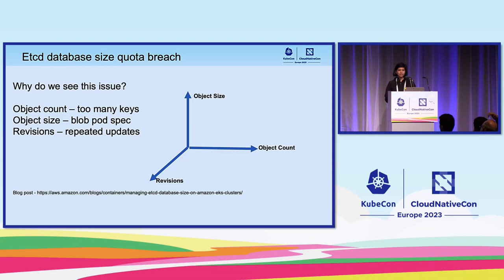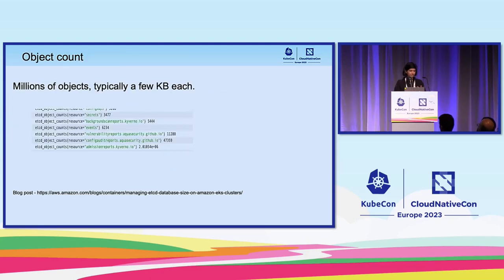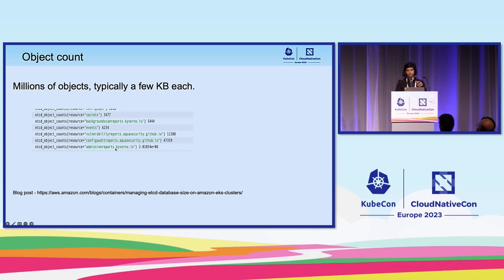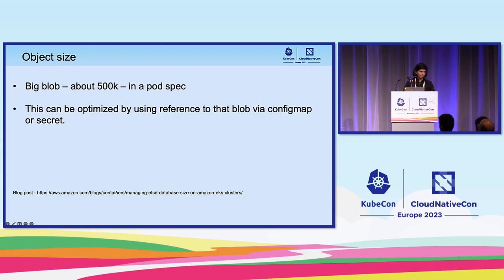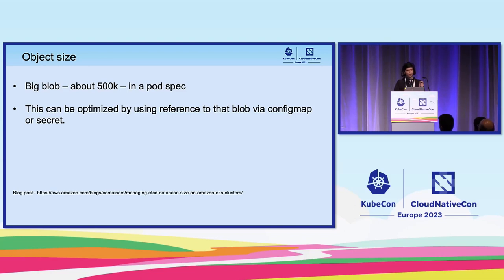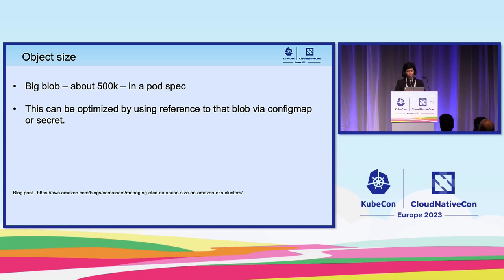There are three main factors behind this issue: object size, object count, and multiple revisions due to fast updates. One example from production shows the admission reports key with two million objects — even if each object is just a few KBs, this racks up GBs of space quickly. We have a blog article about this. The second factor is large object size — when a workload has a big binary blob in the pod spec, such as SSH keys, the pod spec can grow to 500K or 800K. While supported, it's not optimal; referencing the big blob instead of embedding it is the recommended optimization.